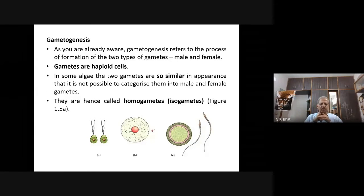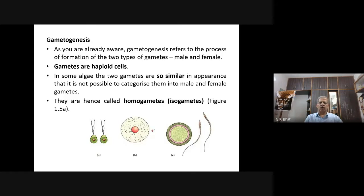Now let us study gametogenesis. As you are already aware, gametogenesis refers to the process of formation of two types of gametes — male and female. The male sex cell is also called male gamete, and male gamete is also called sperm. We come across formation of male and female gametes. Male gamete is called sperm and female gamete is called egg in case of animals. One thing you have to always remember: gametes are haploid.